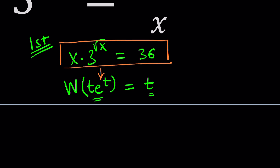Now, we have an x and a square root of x. First of all, you need to check the coefficient and the exponent. What do I mean? This I consider the coefficient and this I consider the exponent — they are not the same. But we want them to be the same, like t and t. Not t and coffee — you don't want that.